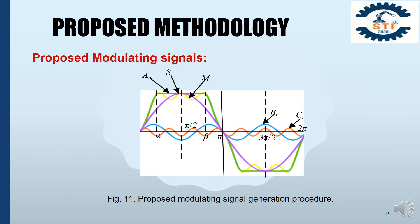This is our proposed modulating signal. For generating this modulating signal, first, the fundamental frequency sine wave, indicated by the purple color, is added to another sine wave indicated by the sky blue color, whose frequency is 3 times the fundamental frequency. After that, a subtraction is done between the summed signal and a sine wave indicated by red color, whose frequency is 7 times the fundamental frequency. The resultant waveform is indicated by M. For providing optimal total harmonic distortion, the resultant waveform is reserved from alpha to beta, as shown in this figure.